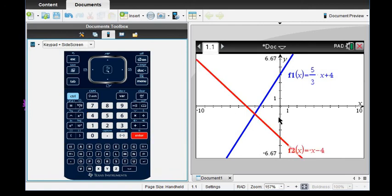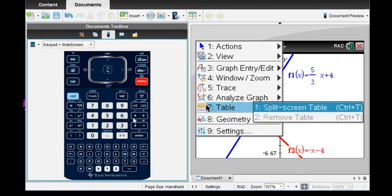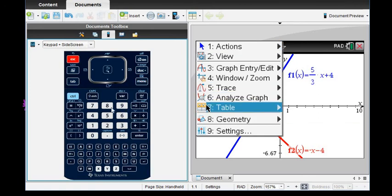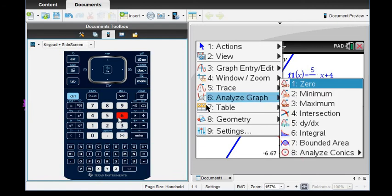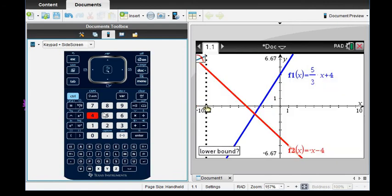And so we can see our two lines on here. We can see that they intersect at this point. So to find this exact point, what we can do is we can go to menu, analyze graph, which is option 6. And then we're going to choose the intersection point.